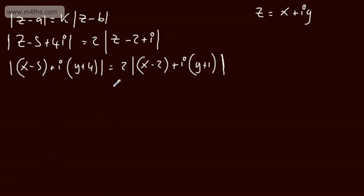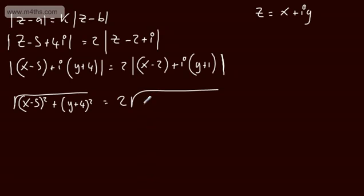Please do go back if that is all new to you so you can understand what's going on here. I'm now going to remove the moduli and I'm going to do this step by step as one of the common errors is not to square the value of k. So removing the moduli, I'm going to have the square root of x minus 5 all squared plus y plus 4 all squared, and that's going to be equal to 2 lots of the square root of x minus 2 all squared plus y plus 1 all squared.